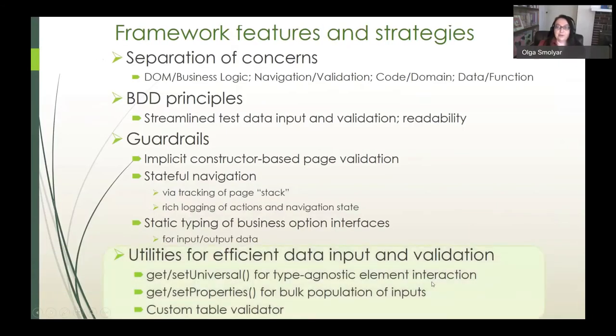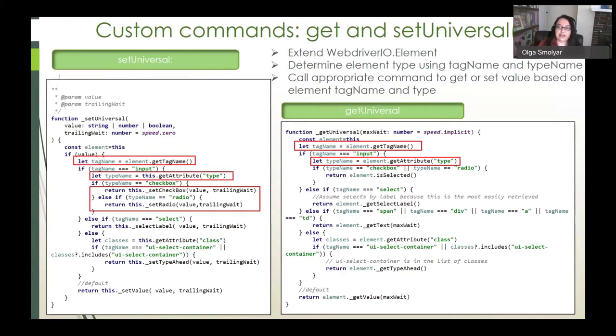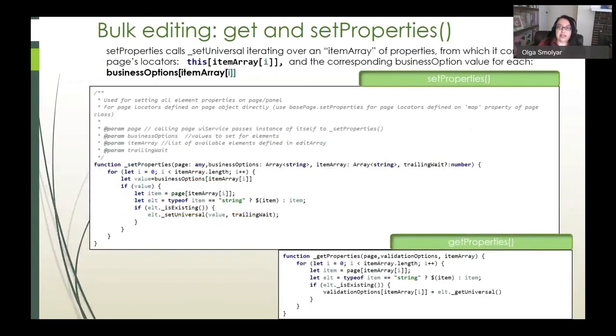So finally we'll look at some of the utilities that we use for efficient data input and validation. Get and set universal extend webdriver.io element and they first determine the element type using tag name and type and then they call the appropriate command to get or set the value based on the element's tag name and type. And this is useful because it precludes the need for page objects to define accessors for every element based on the element type.